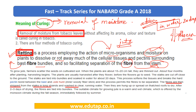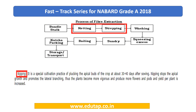So this process is called retting and it is important for fiber extraction. After retting, we perform stripping: once the tissue has been softened, we separate it from the stem — that process is referred to as stripping. Looking at the flowchart: first the bundle stalk, then retting, then stripping, then washing, squeezing, sun-drying, baling, kacha packing, and finally storage and transport. In the exam, you need to know that for jute, we use these two terms specifically: retting and stripping.